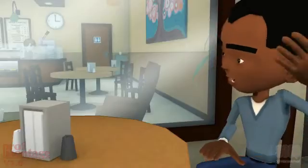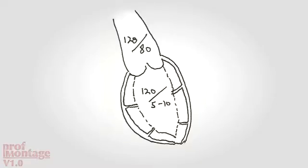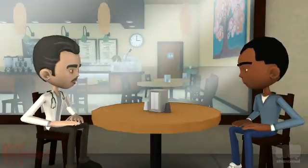What is the upstream pressure? The central aortic pressure. Since most flow takes place in diastole, this is the aortic diastolic pressure. And the downstream? It's the left ventricular cavity pressure.